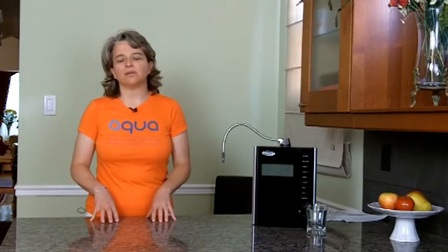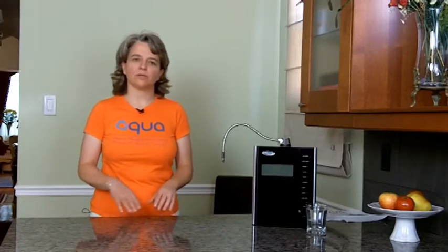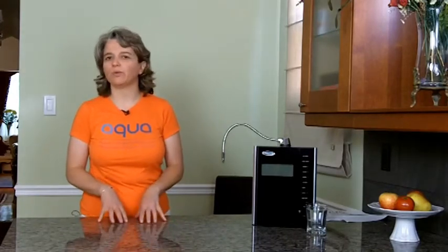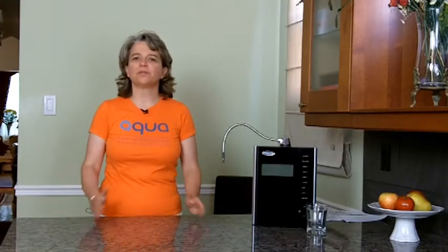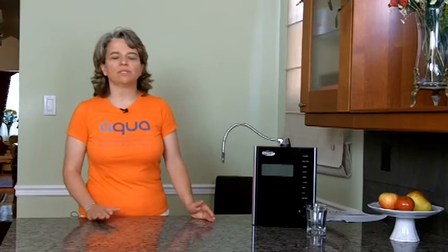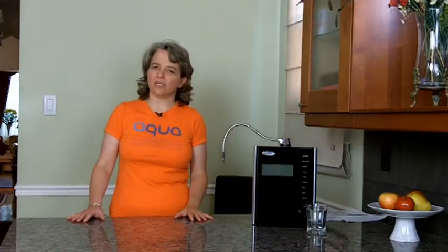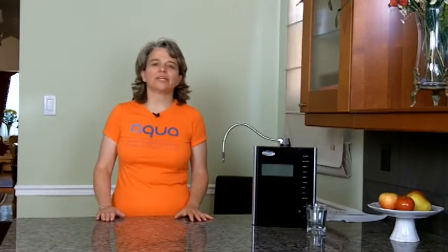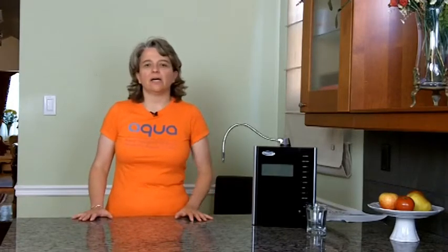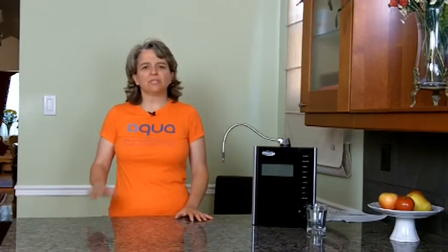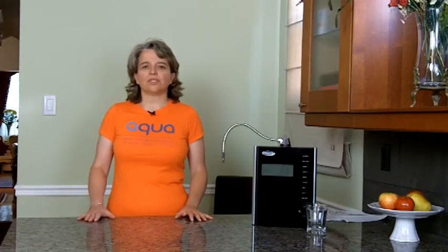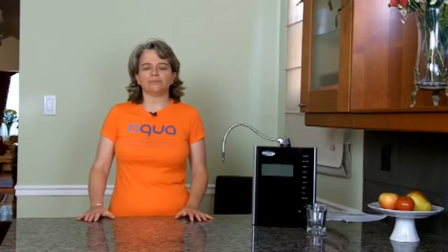You stay on level two for maybe another week or ten days, and then once you've gone through that first period where you've gotten your body used to it, you can move up to level three. That's generally where you're going to stay with drinking water on an ongoing basis thereafter. Level three on most ionizers is about a 9.5 on the pH scale, and that's a really good level to stay at. You can just keep drinking at that level.